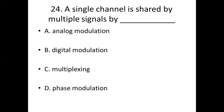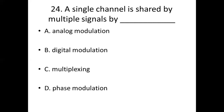Twenty-fourth bit: A single channel is shared by multiple signals by dash. Option A: Analog modulation. Option B: Digital modulation. Option C: Multiplexing. Option D: Phase modulation. Answer: Option C — Multiplexing.